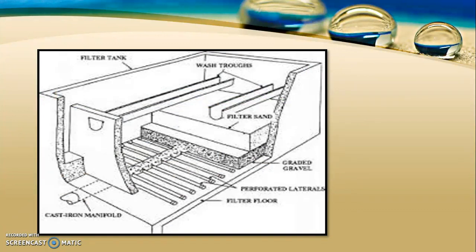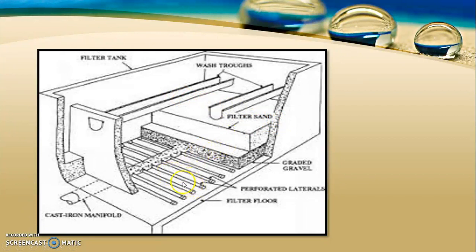A rapid sand filter consists of a gravel layer at the bottom, a sand layer above it, and a wash water trough above the sand layer. At the bottom is the under-draining system from where the filtered water is passed. Water first enters the filter sand, then the gravel, then the perforated laterals, from the laterals to the central manifold, and from the manifold to further processes.